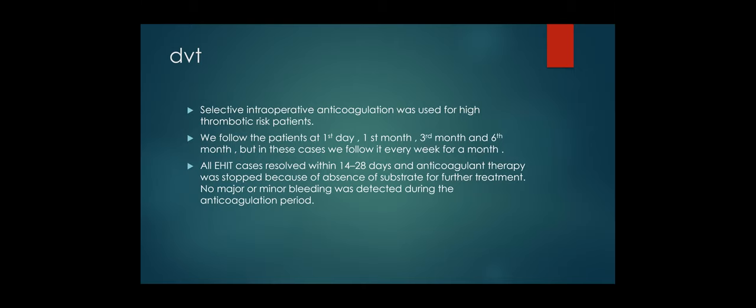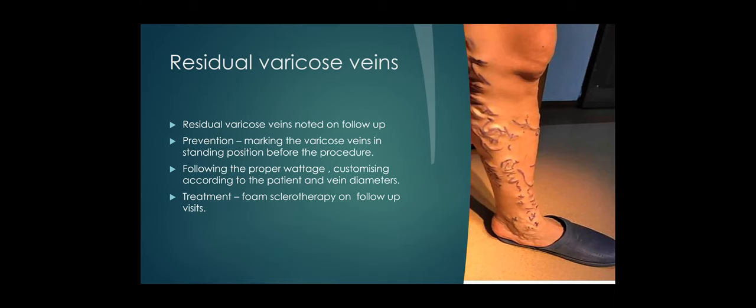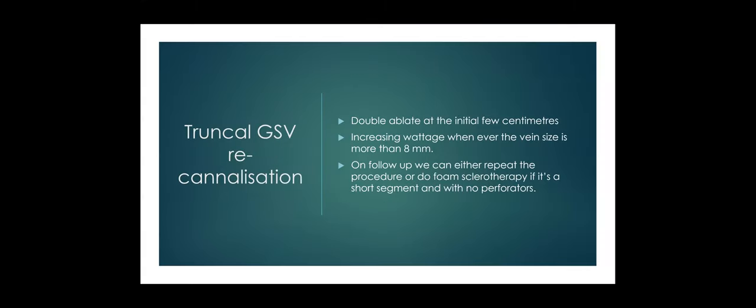Sometimes patients come and complain of residual varicose veins. It's better to make the patient stand before the procedure, mark them properly, and try to treat all of them so that you don't have any recurrence. Sometimes truncal GSV recanalization is seen — if you don't use proper wattage or the veins are dilated, they may not be fully ablated. On specific follow-up you can see they are patent and alive. You can then do re-ablation, or sclerotherapy if there is no connected perforator.